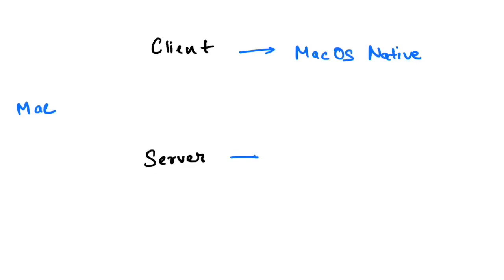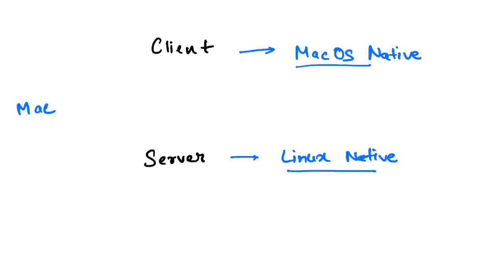For Mac, the server only comes as a Linux native server — it runs Linux containers behind the scenes. The native macOS client communicates with the Linux containers through a seamless connection that is abstract to you — you don't need to set up anything. So on Mac, you can run applications supported on a Linux platform inside your containers.